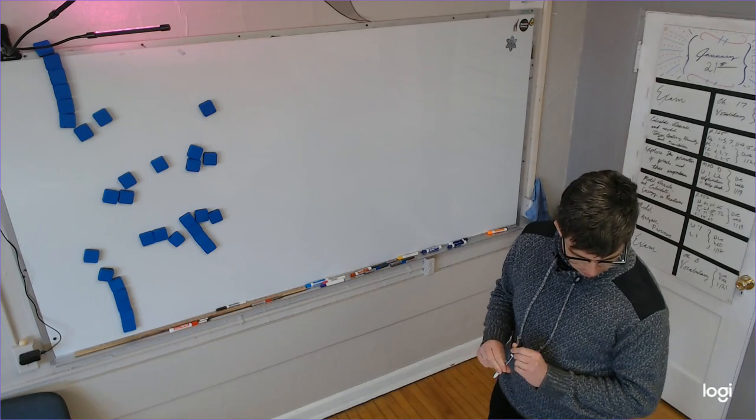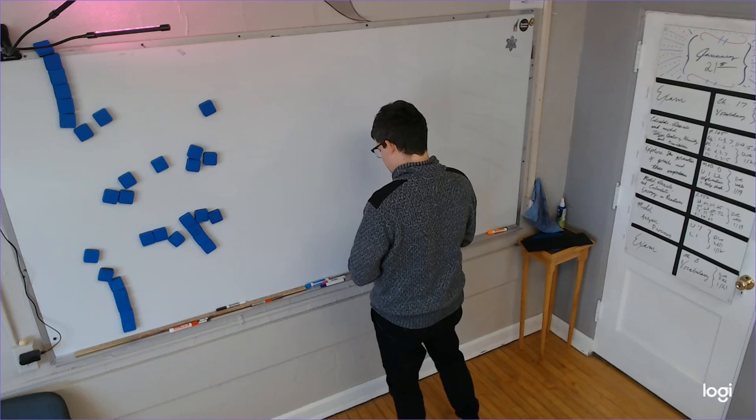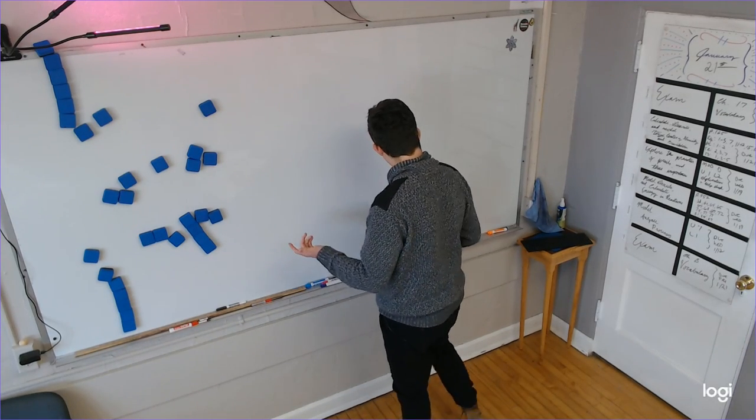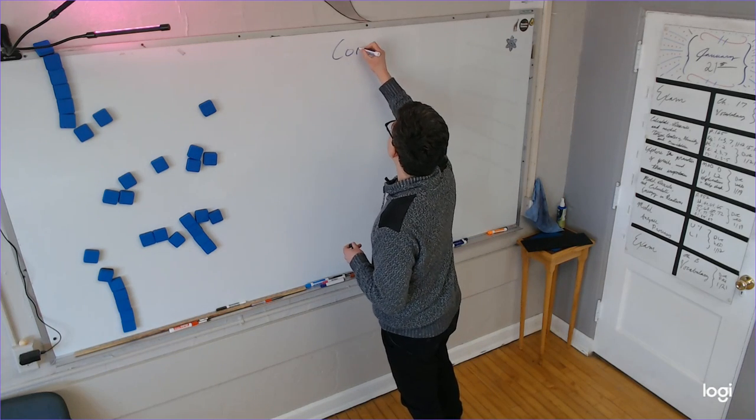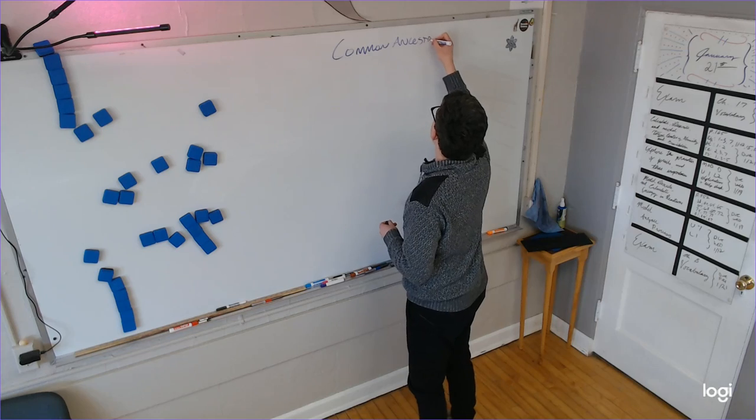Science time. We're going to talk today about common ancestry. I'm going to use a different color besides this one. What would be a good color to use? Purple. I always use purple. I like purple. Common ancestry.